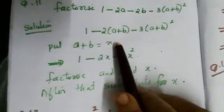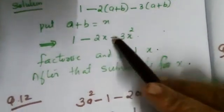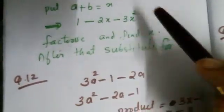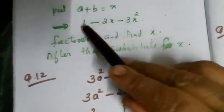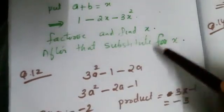Now put a+b = x. So this equation becomes 1-2x-3x². Then factorize this. Sum is equal to -2 and product is equal to 1×(-3). After that, substitute for x.